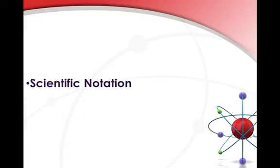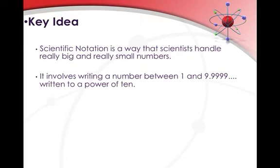So let's have a look at scientific notation, which is one of the first key science concepts you'll need to know for this module, because it's working with numbers and orders of magnitude. Scientific notation is a way that scientists handle really big and really small numbers. Of course, if you're writing out something such as 1 times 10 to negative 15, there are a lot of zeros you have to write before you get to the 1. What we essentially do in scientific notation is write a number between 1 and 9.999, and then write it to a power of 10 — that idea of magnitude.